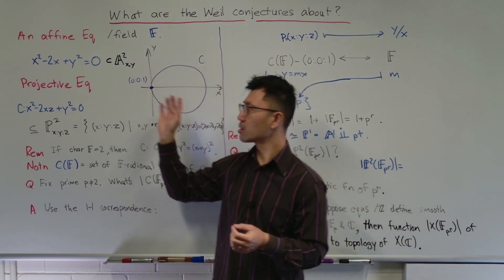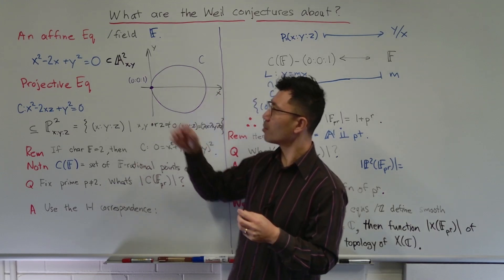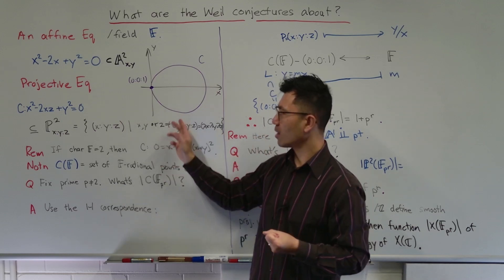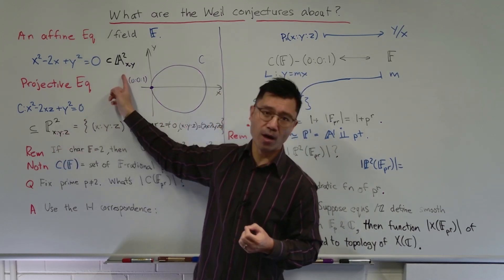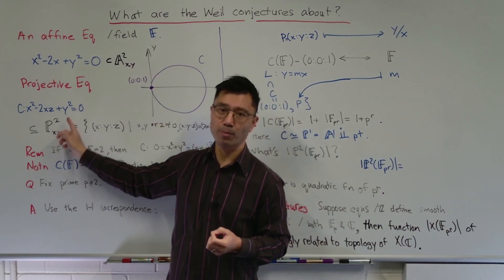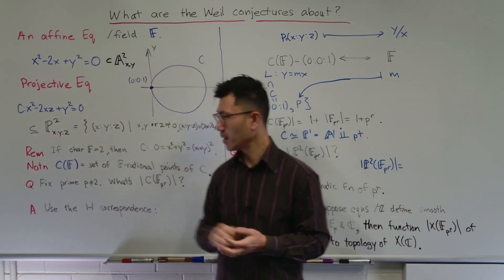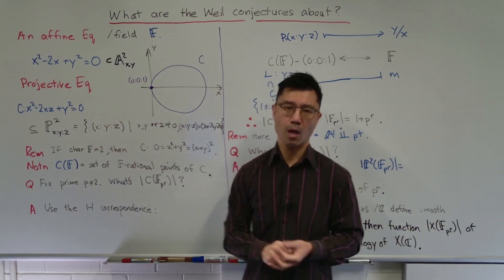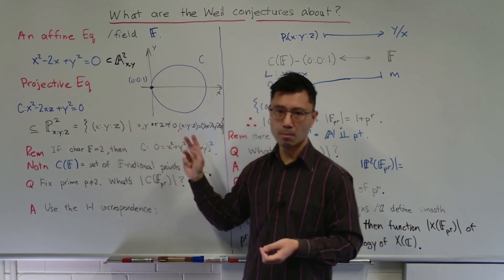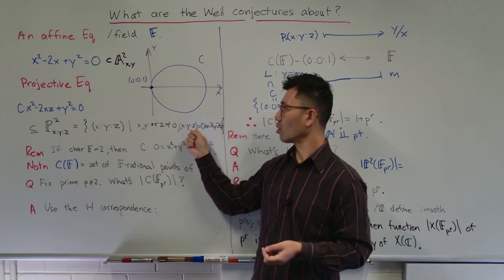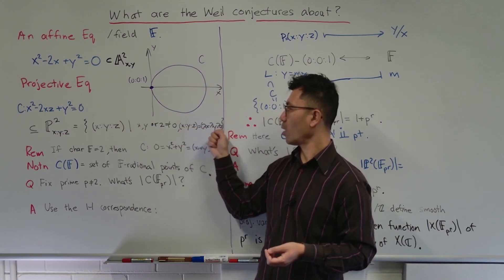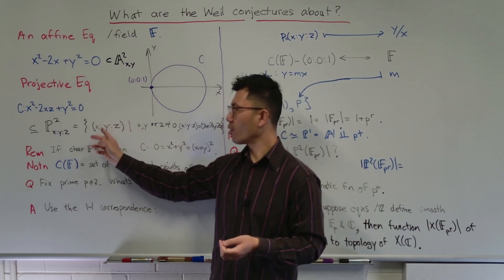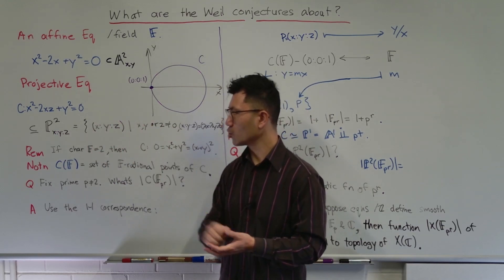The Weil conjectures are mainly concerned with what are known as projective varieties. So let's look at the projective version of this equation. In projective geometry, instead of looking in the affine plane with coordinates x and y, we look at the projective plane with homogeneous coordinates x, y, and z. That means we're looking at triples x, y, z where not all of them are zero, and we identify two of them if they are scalar multiples of each other — so (x, y, z) is the same as (λx, λy, λz) for some scalar λ. Basically we only care about the ratios between them.